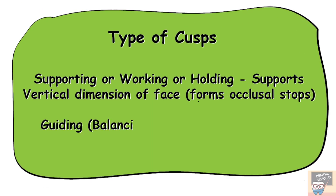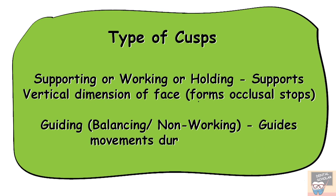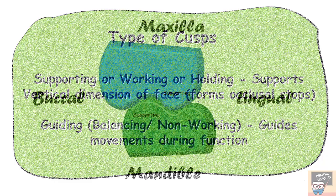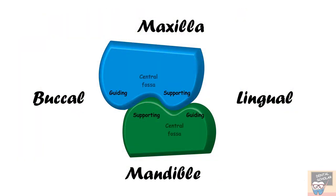The guiding, balancing, or non-working cusps guide the movement of the mandible during function. They do not form any occlusal stop — that is, they don't occlude with the opposing tooth. The maxillary buccal and the mandibular lingual cusps are the guiding cusps. The central fossa forms the occlusal stops for the supporting cusps of opposing teeth.